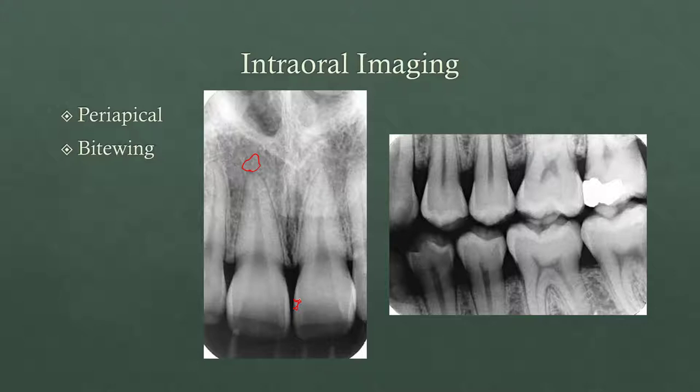With bitewings, it's really important that you have the right angulation so that you open up the contacts — this area right here where the teeth contact each other — because that's primarily what you're looking for in bitewing radiographs: caries, so radiolucencies that start to develop within the enamel of teeth. Anytime you take an x-ray, you also want to look at bone levels, so the alveolar crest of bone.